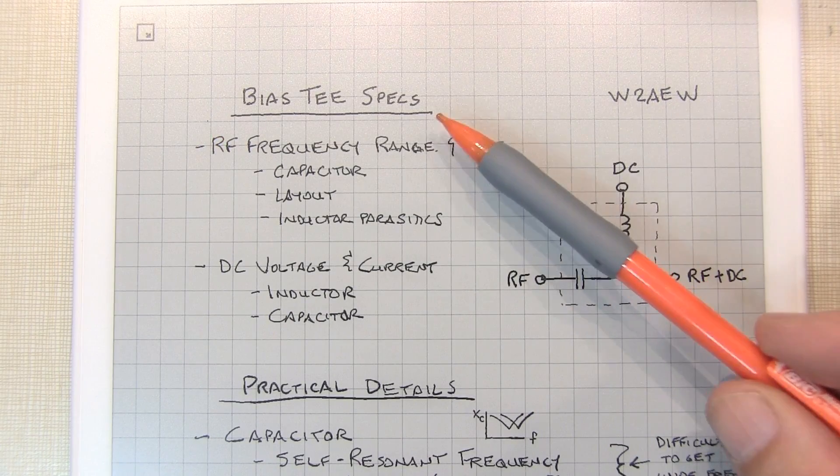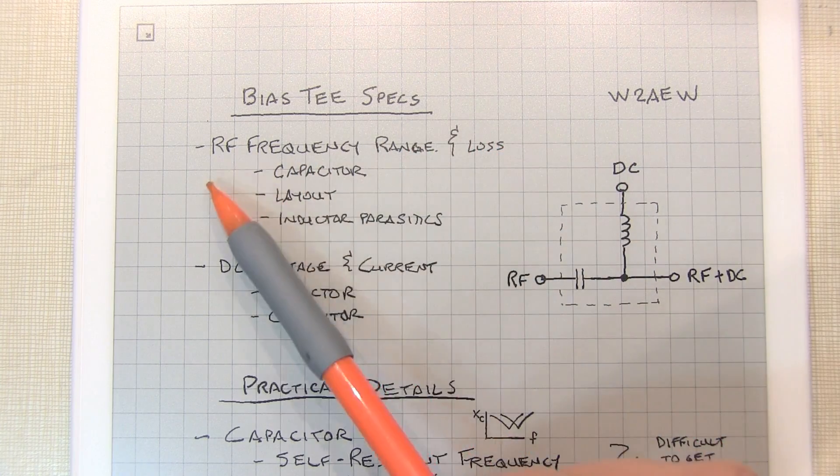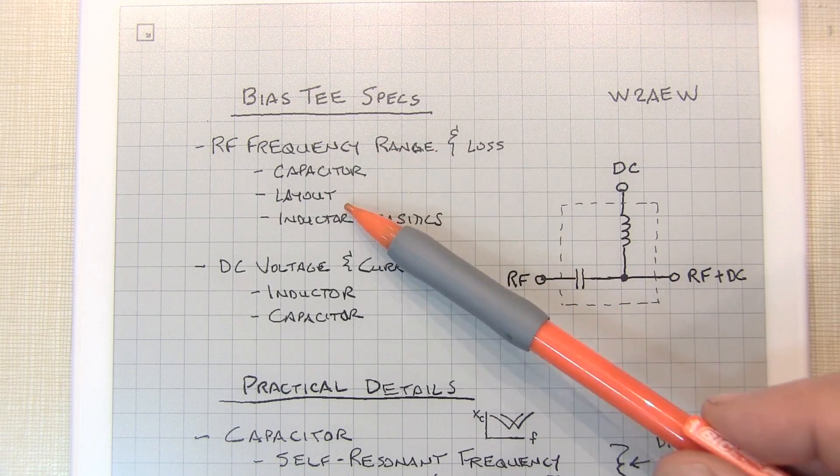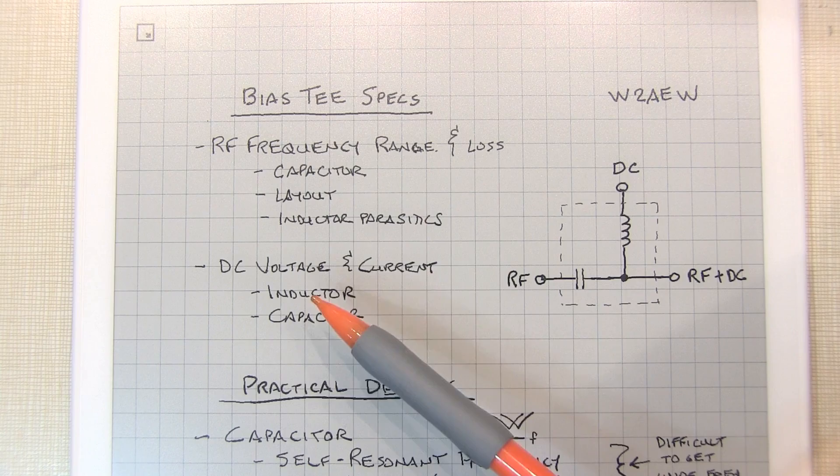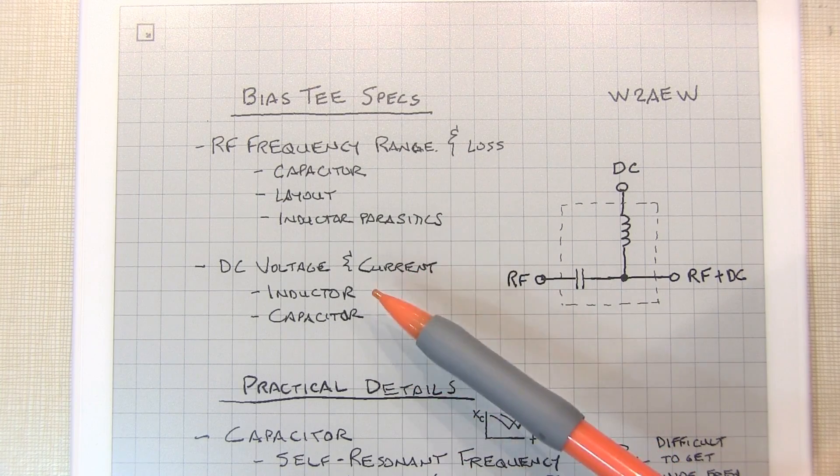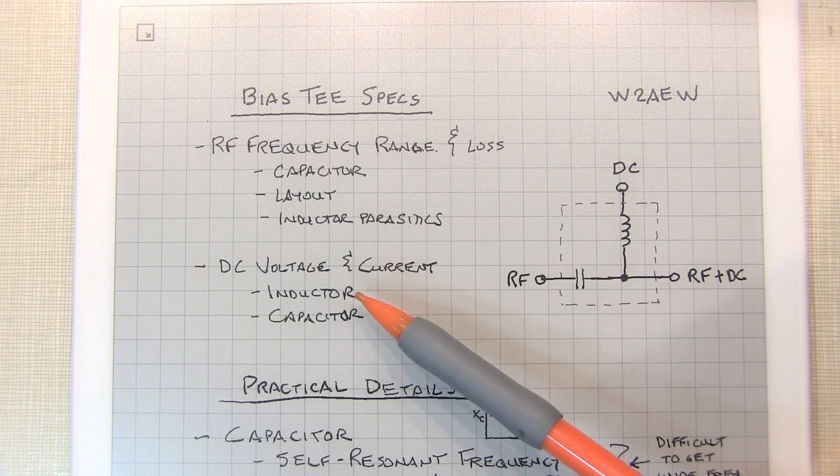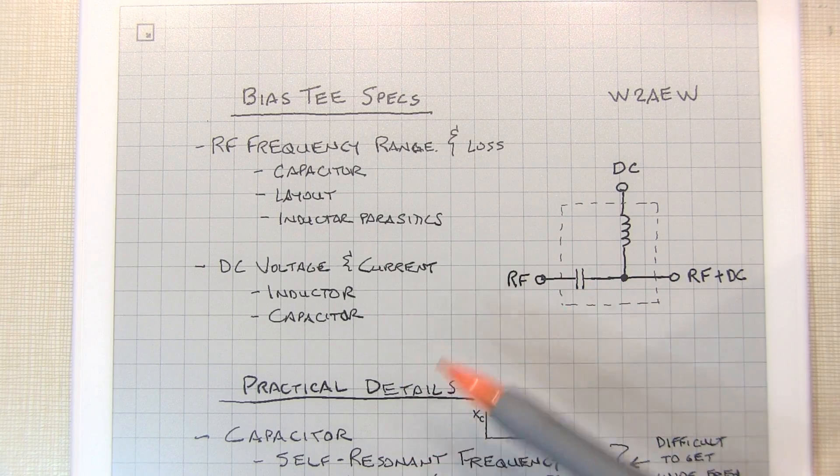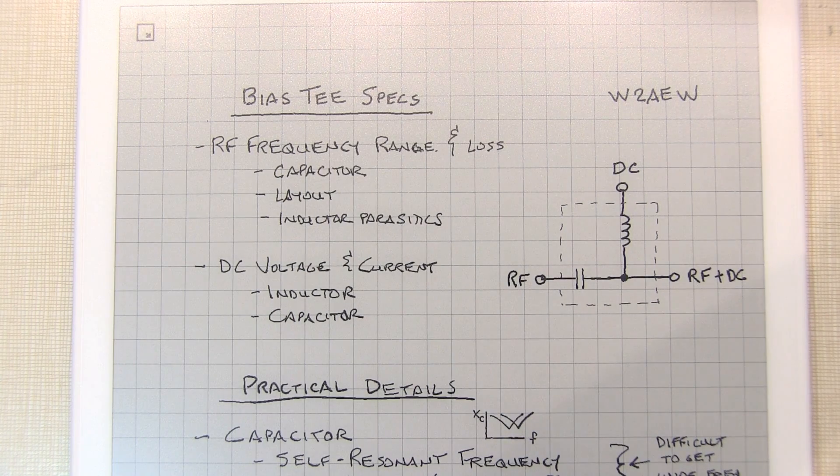Some of the basic specs for a bias tee will include certainly the frequency range and insertion loss or even VSWR of the RF path. And those are going to be determined largely by the capacitor choice, the layout, the inductor parasitics and such. The DC characteristics or DC specifications for how much voltage you can apply and how much current you can supply through the DC path is going to be limited by things like the inductor construction in terms of the size of the wire that's used, saturation of any cores that it might be in the inductor, and also the voltage rating for the capacitor itself.